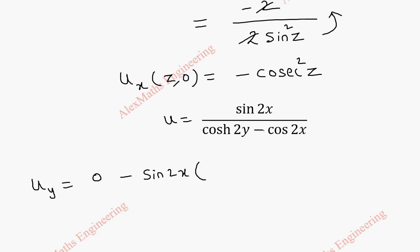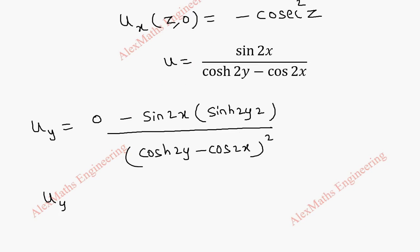And differentiation of this will be this is sinh 2y into 2 and this is constant. So it is 0. Whole division we have cosh 2y minus cos 2x full square. Now we have to find u_y of z comma 0. When I substitute 0 here the entire numerator is 0 so the total value itself 0.